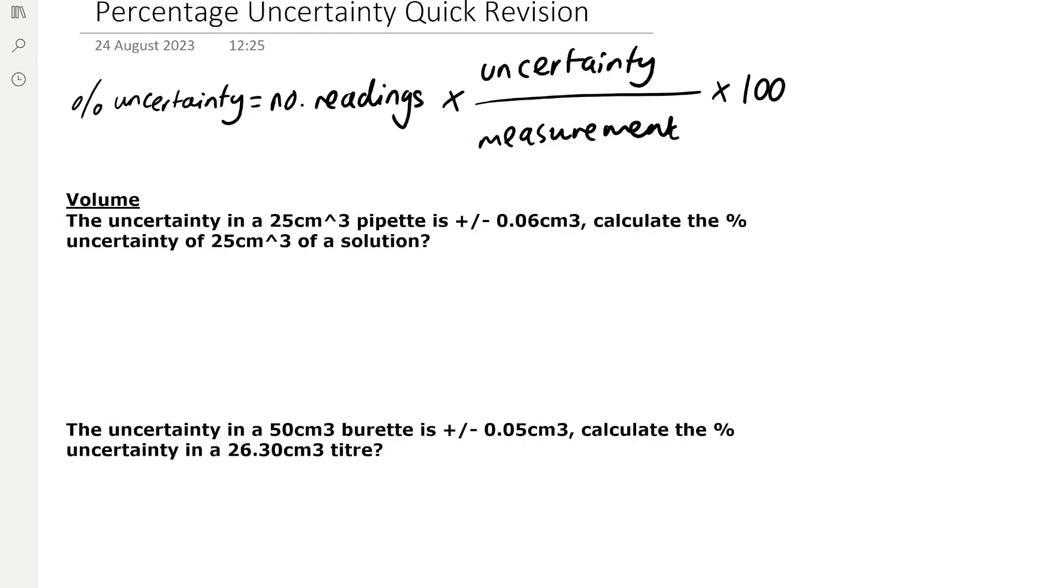we're only taking one reading and our uncertainty is 0.06 and we're dividing by the measurement, which is 25 centimeters cubed. And then we need to remember to multiply by 100 to convert to a percentage. And that gives us 0.24%.